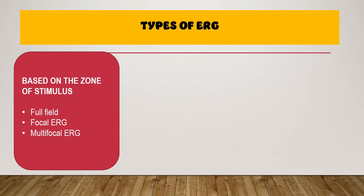There are various types of Electroretinography, which can be divided based on various parameters. In general, what we do is an ERG of the entire retina: you give a bright source of light and get a cumulative waveform from the entire retina — all photoreceptors, not just those in the macula. Based on the zone of stimulus, you have a full-field ERG, which is the most common, a focal ERG at a specific point, and a multifocal ERG.